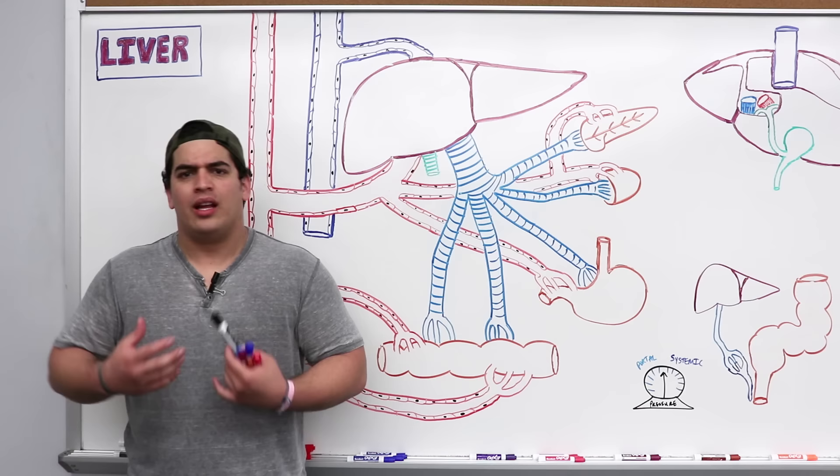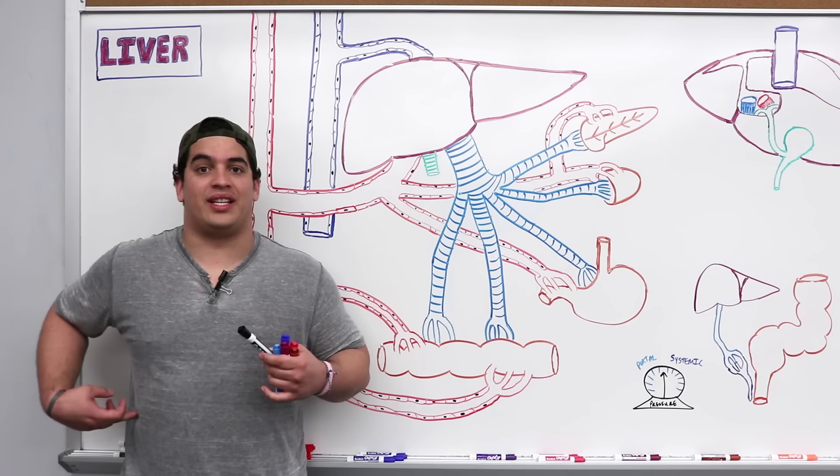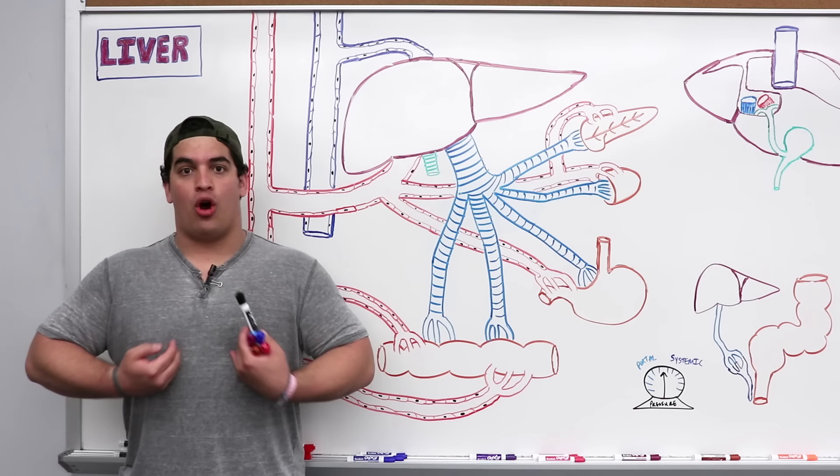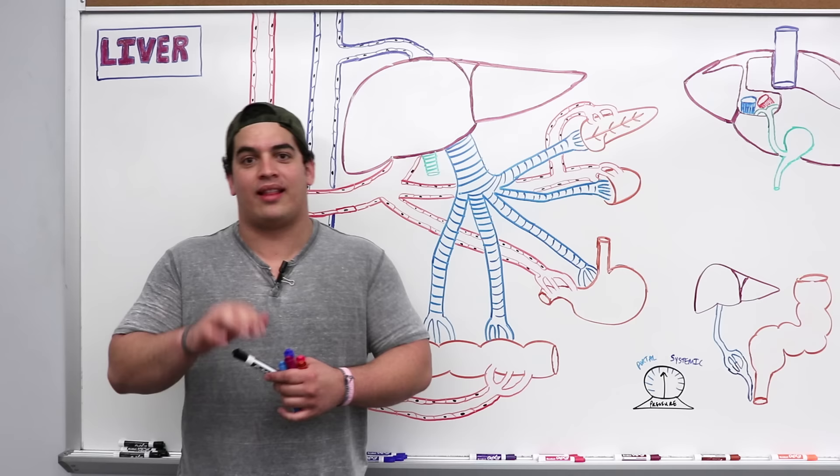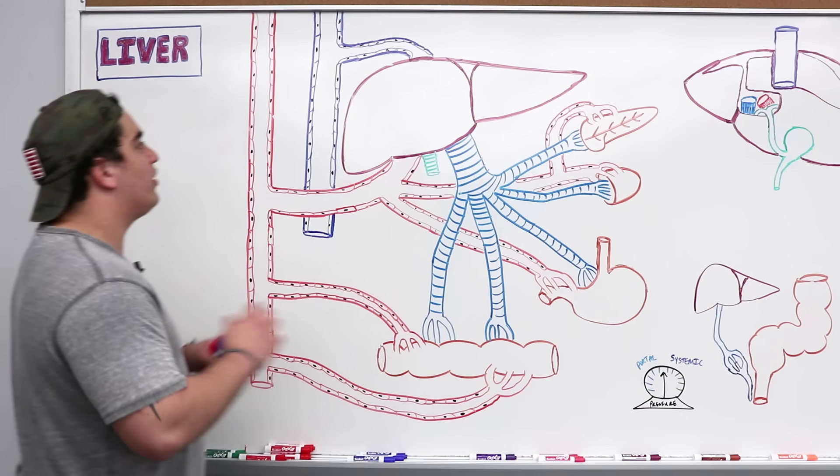The liver extends from approximately the seventh rib down to the eleventh rib. There is a small portion exposed because of the costal margin and the xiphoid process. That's important — whenever someone's doing CPR, you always feel for that xiphoid process, because if you start there you could break it off and stab the patient in the liver instead of helping them.